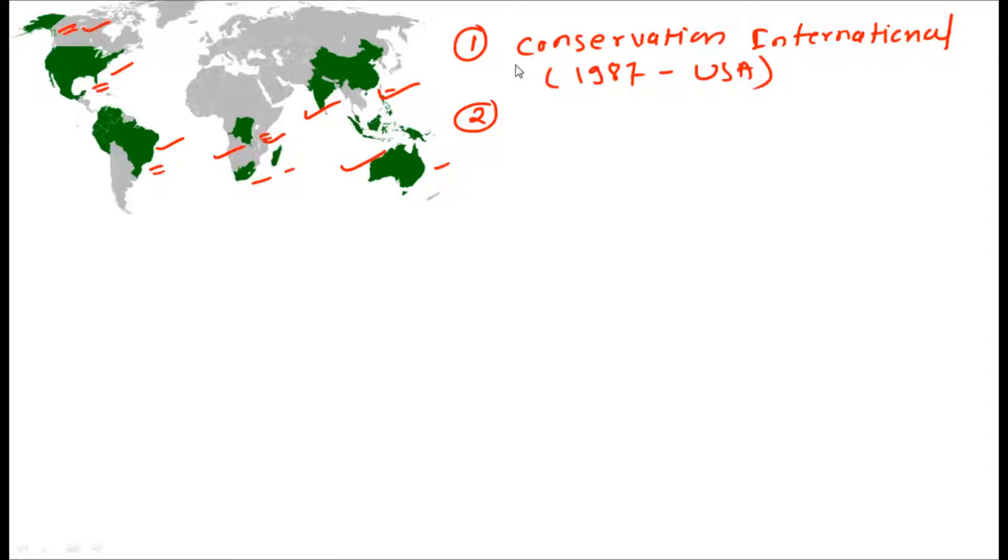What are the criteria to be the megadiverse countries? The Conservation International gives much importance to the endemic species. Endemic species are those species which are restricted to a certain part of the world only. They have very restricted habitat, and only that habitat is quite favorable for their growth, and that is why they become endemic. Those countries which have 5,000 species of endemic plants or animals are eligible to be the megadiverse country.